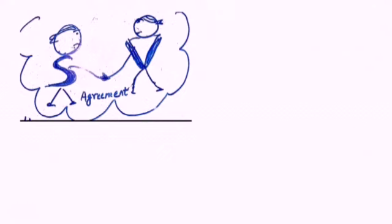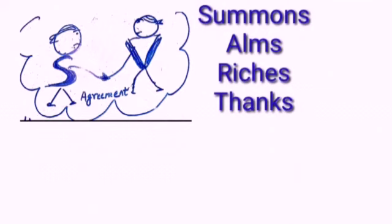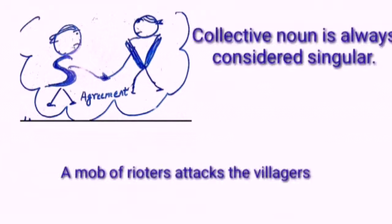Some nouns are considered singular but they appear as plural. For example, summons, alms, riches and thanks. Let's see an example. I have received a summons to attain the court. Collective nouns are normally considered singular.